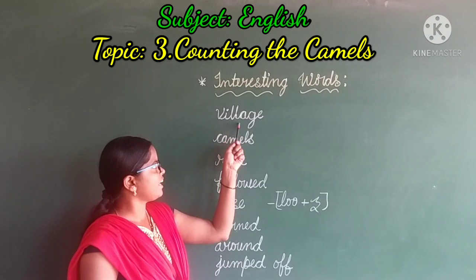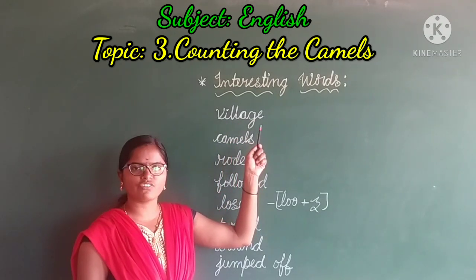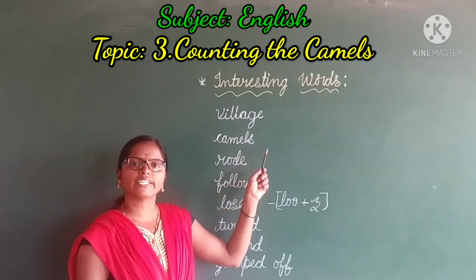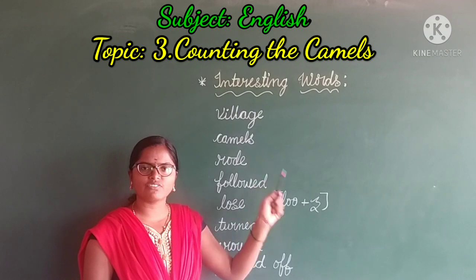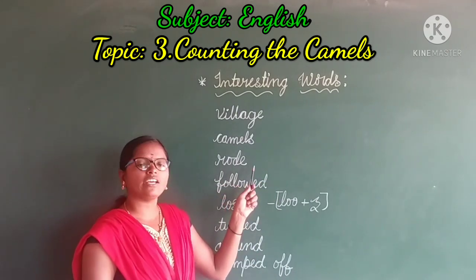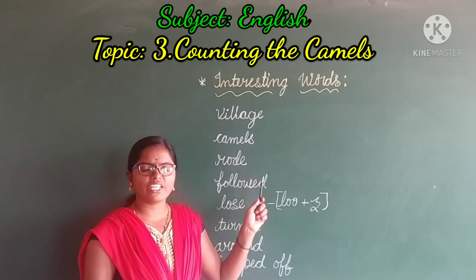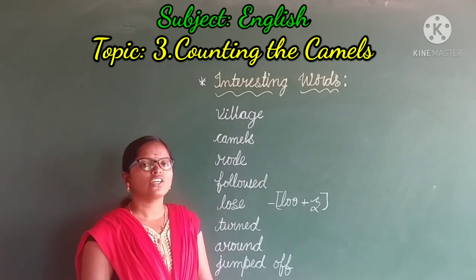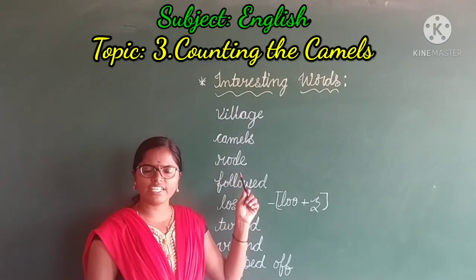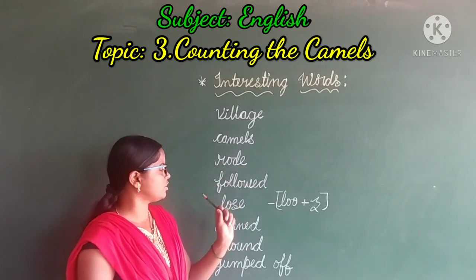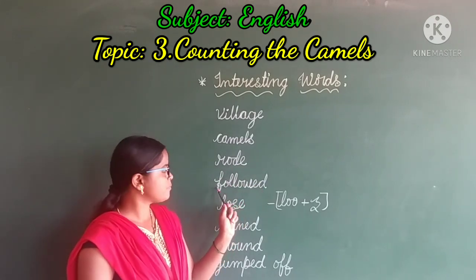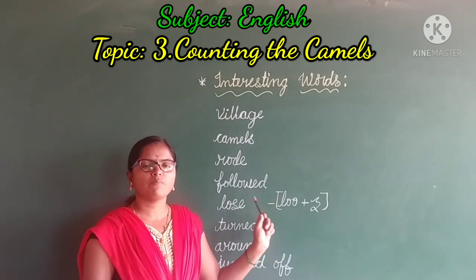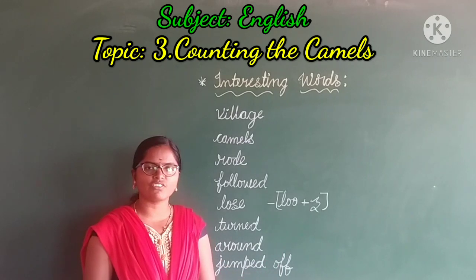Here are some interesting words from the third lesson. First: V-I-L-L-A-G-E — Village. See how to pronounce that word: Village. Next: C-A-M-E-L-S — Camels. Next: R-O-D-E — Rode. Rode means the past tense of ride — they rode the bike or horse. Next: F-O-L-L-O-W-E-D — Followed. Follow plus ED — Followed.